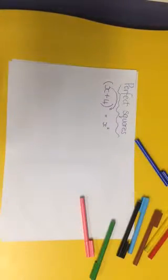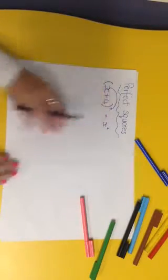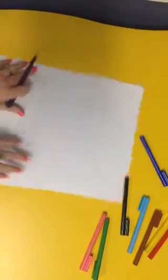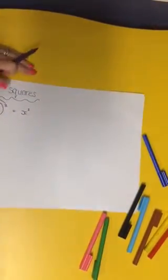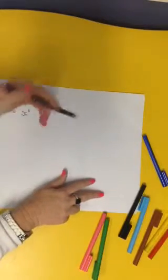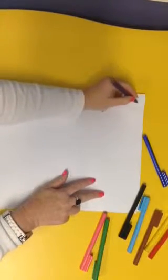Alright, so we're going to be looking at perfect squares. I'm going to turn the paper around this way so let me just check you can still see it. So what's going to happen is you're going to be given an example like this.